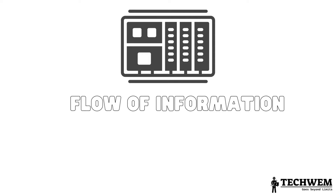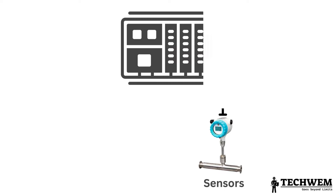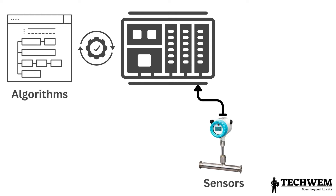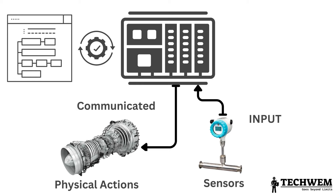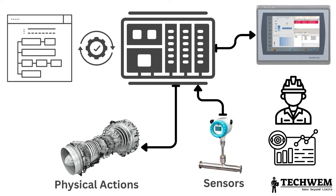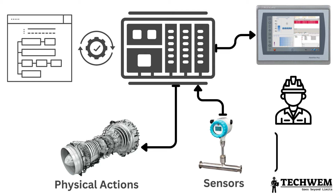In an ICS, the flow of information and control follows a structured path. Sensors continuously gather data from the physical environment and transmit it to the controllers. The controllers process this data using predefined algorithms and make decisions based on the desired control objectives. These decisions are then communicated to the actuators, which execute physical actions to adjust the industrial process. Simultaneously, the controllers send data and status information to the HMI, providing operators with real-time insights into the system's performance. Operators can interact with the HMI to monitor the system, set parameters or initiate specific actions, and any changes made are transmitted back to the controllers, which adapt their control strategies accordingly.